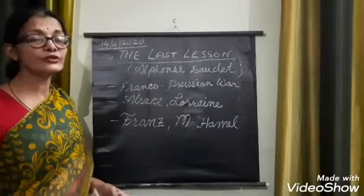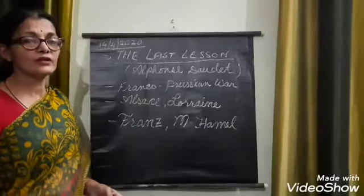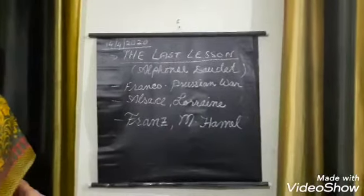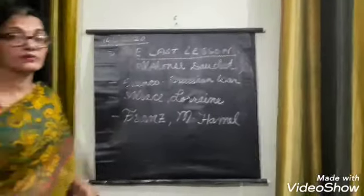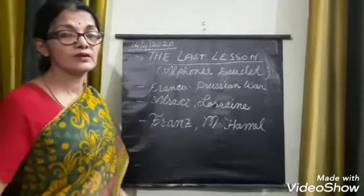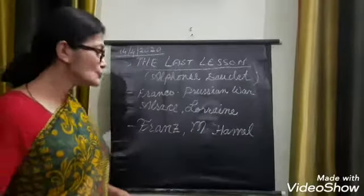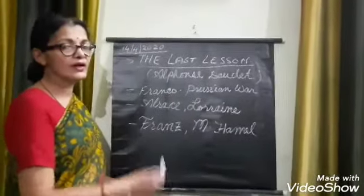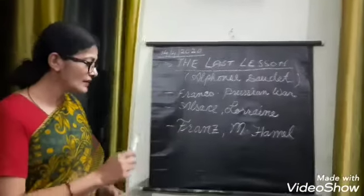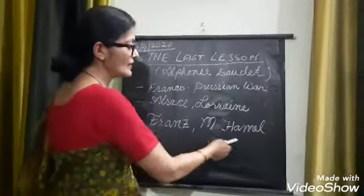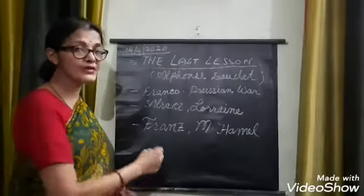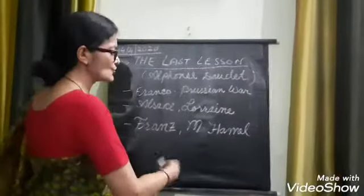It is usual with children of this age — even it happens to all of you. Sometimes you are reluctant to go to school. There may be many reasons. For Franz, there were two reasons: he was late, and the main thing was that his teacher M. Hamel had asked him to learn the rule of participles in French grammar.